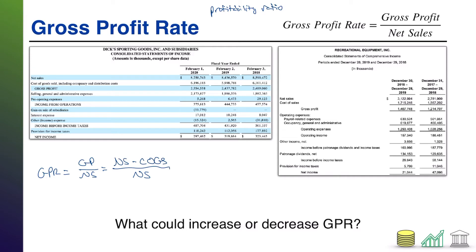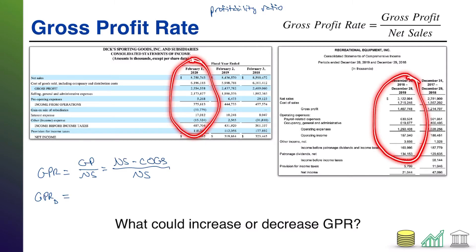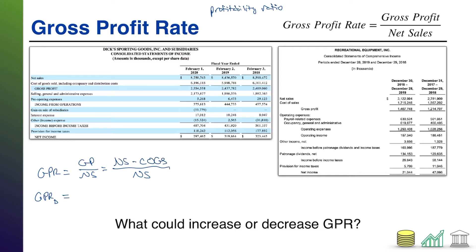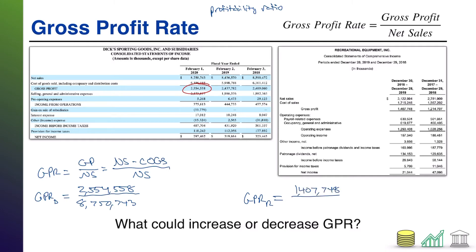Let's do a little math on this and compare these two. For Dick's Sporting Goods, using the most recent year — because they don't have the same year end; one ends on December 2019, one ends on February 2020, so comparable fiscal years — Dick's gross profit is 2,554,558 and net sales are 8,750,743, just pulling that straight from their income statement. For REI, gross profit is 1,407,748 over net sales of 3,122,994. Again, pulling that straight off the income statements.